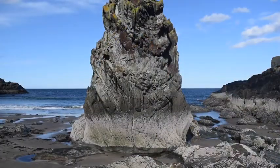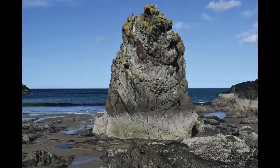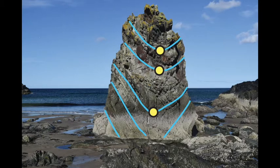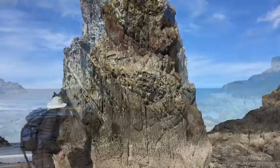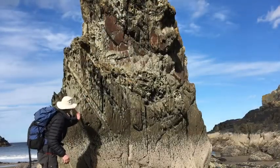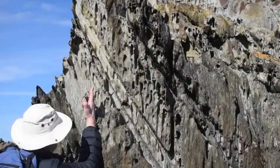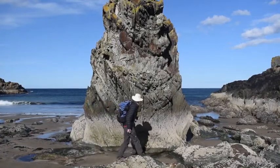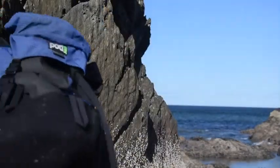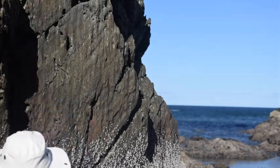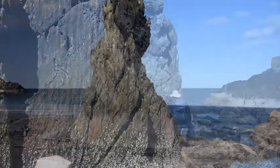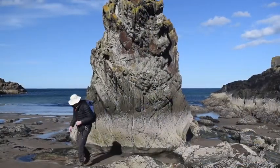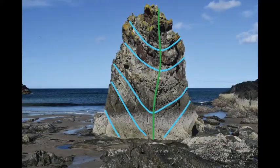Let's start with this outcrop. Can you see the bedding? It's here, so we have a sinform. The hinges are the points of maximum curvature — join them up and that's the axial trace. So what about cleavage? Here's bedding and there's cleavage. Over here, bedding dips left and cleavage is vertical, so they're like this. A sinform and its cleavage.